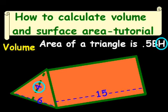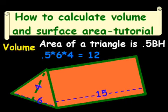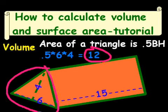We rewrite this equation as 0.5 times 6, our base total, times 4, our height. So 6 times 4 is 24, and 0.5 times 24 is 12. So we know that the area of the triangle is 12.